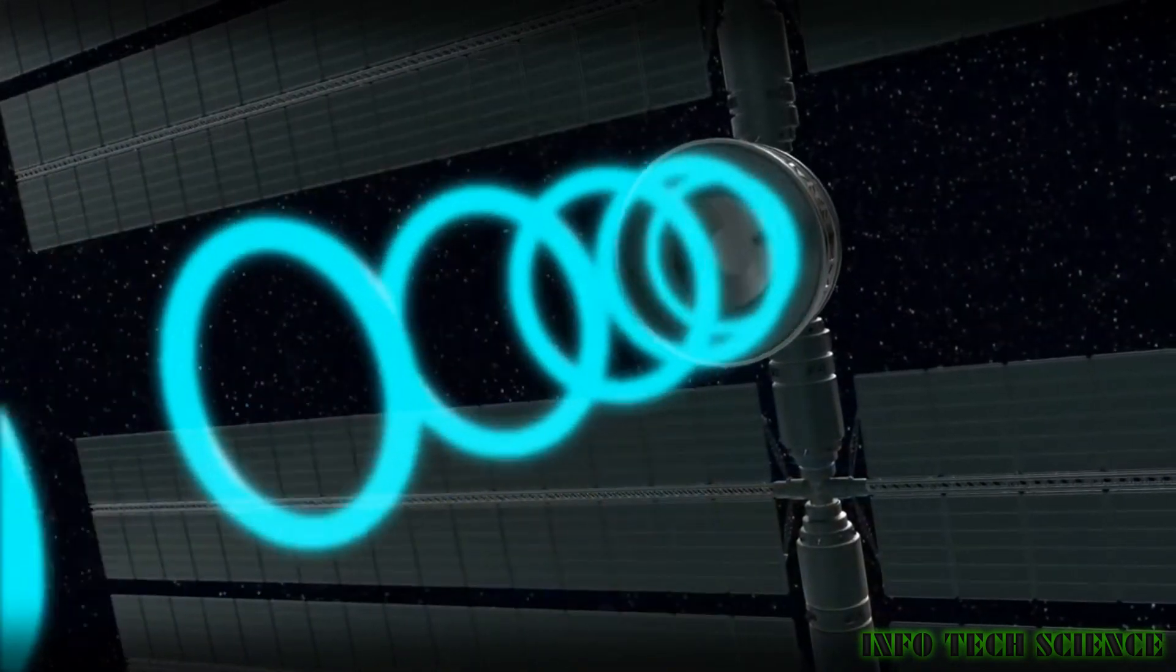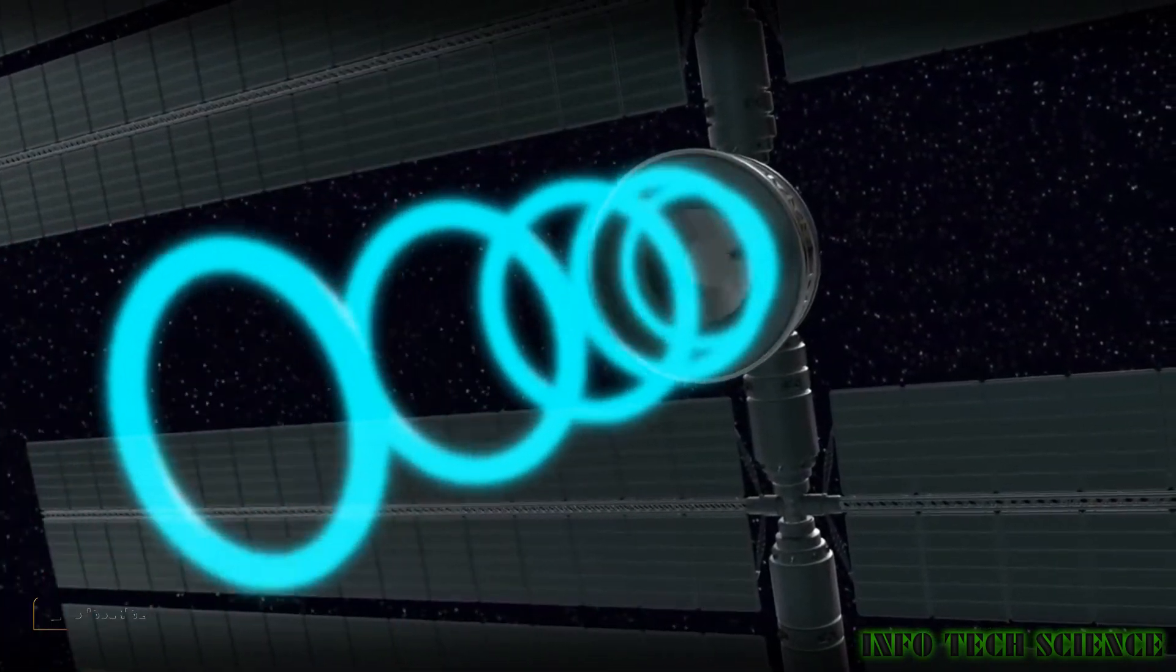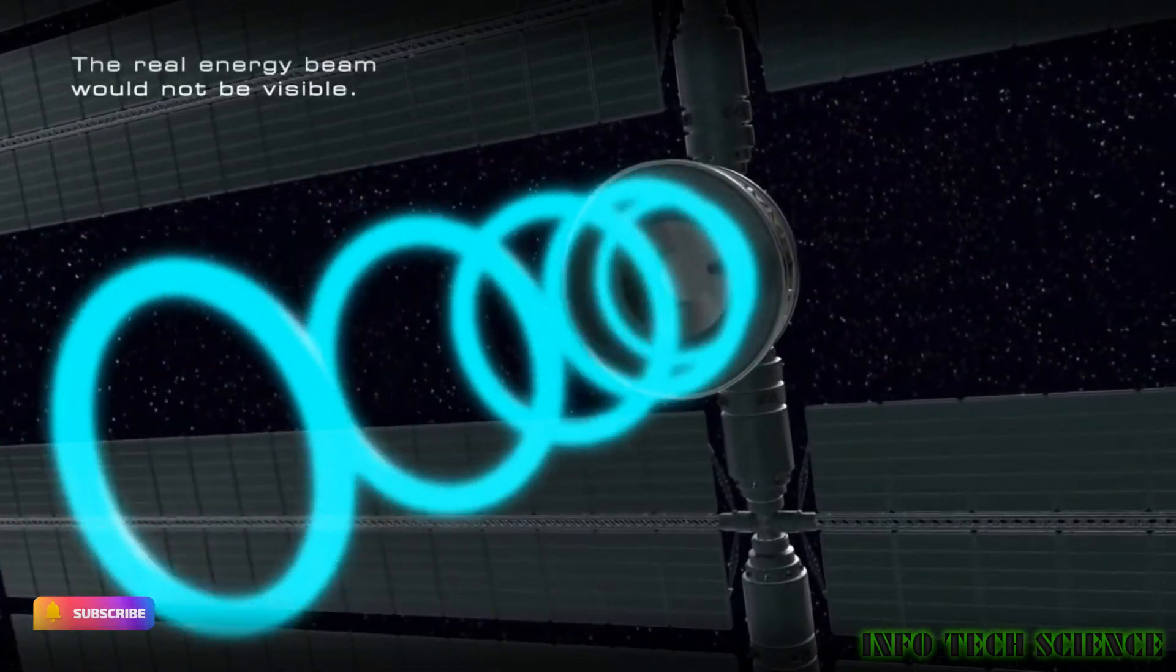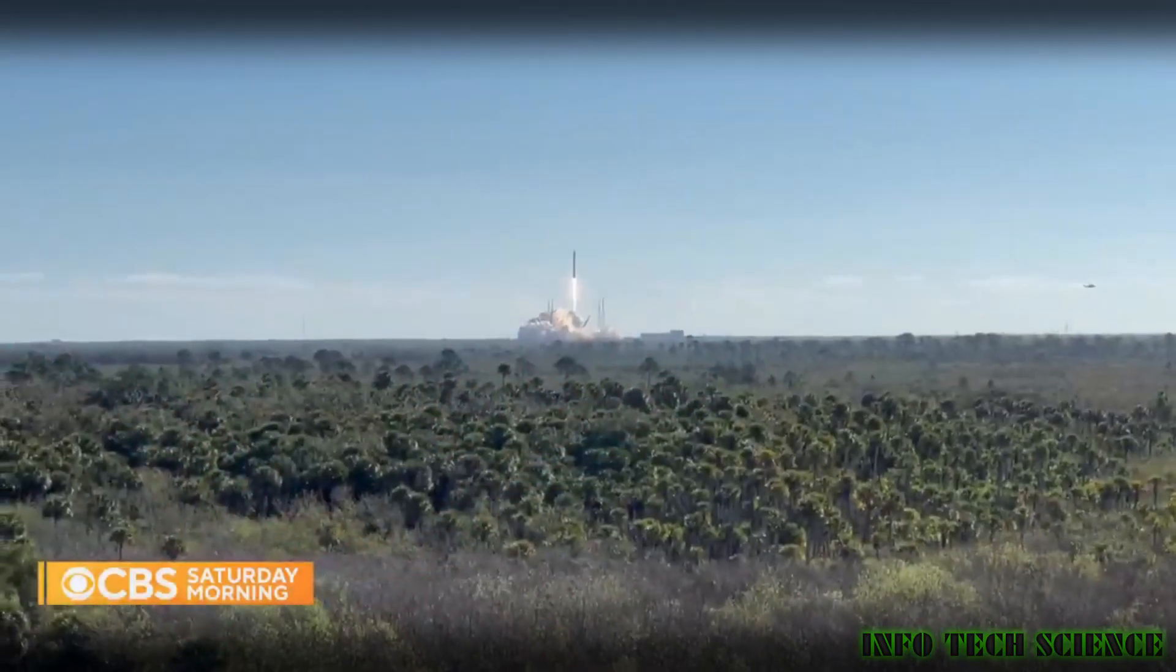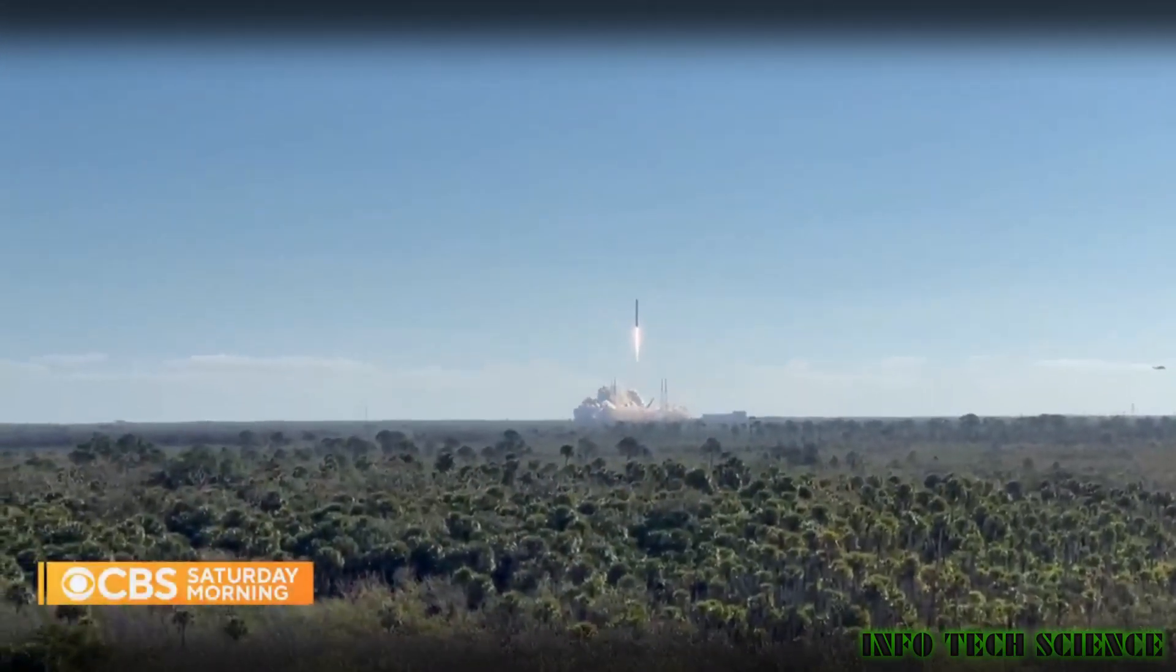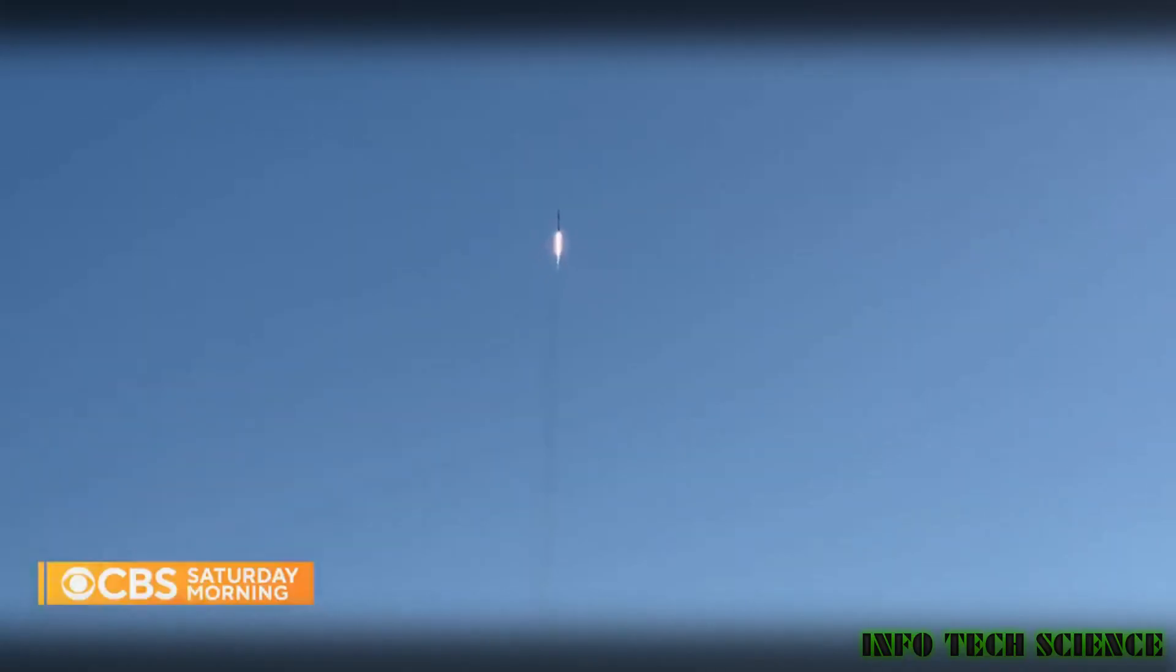Scientists in the future will be establishing a solar grid in space as part of the space-based solar power concept. The idea is to deploy a network of solar panels or mirrors in space to capture sunlight and generate electricity on a large scale.